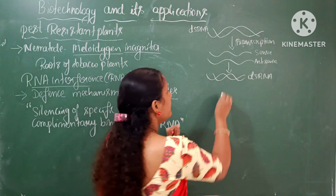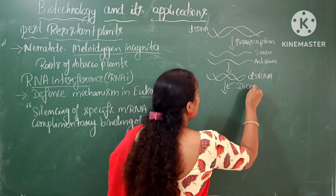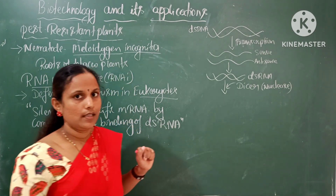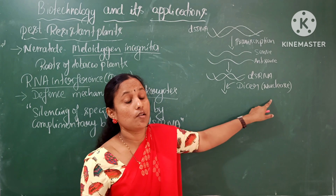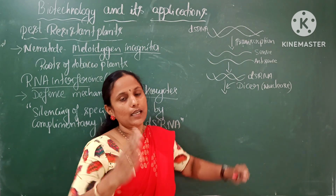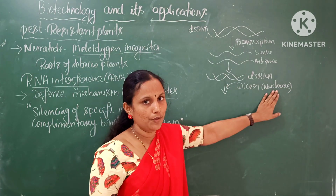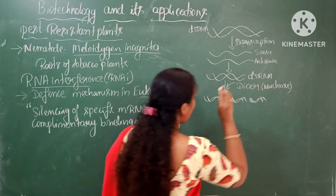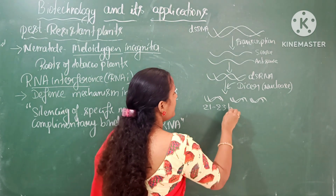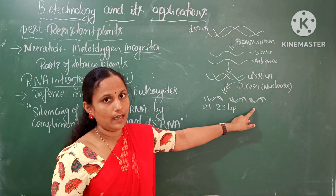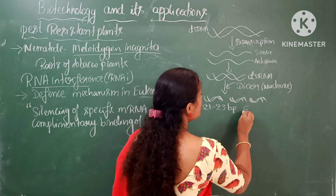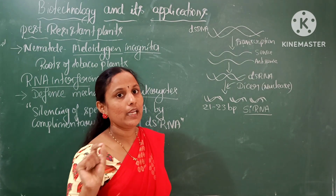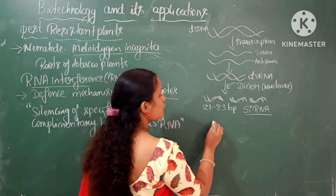An enzyme called Dicer binds to this double-stranded RNA. Dicer is a type of nuclease — similar to restriction enzymes, it cuts nucleic acids at specific sites. Here, Dicer binds to the double-stranded RNA and cuts it into pieces of about 21 to 23 nucleotides in length. These pieces are called small interfering RNA sequences, or siRNA.